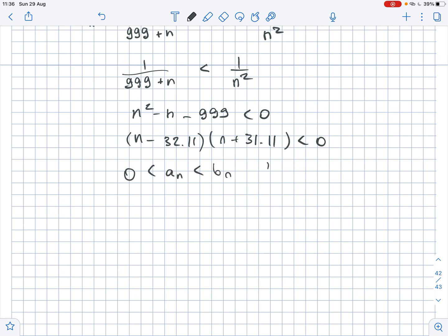So that means that 0 is less than an and an is less than bn for n which are smaller than or equal to 32, and an is larger than bn for n greater than or equal to 33.